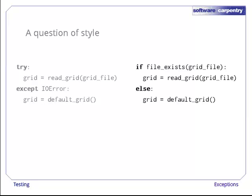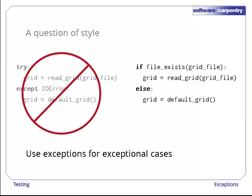Other programmers would explicitly test for the grid file and use if and else for control flow. It's mostly a matter of taste, but we prefer the code on the right. As a rule, exceptions should only be used to handle exceptional cases. If the program knows how to fall back to a default grid, that's not an unexpected event. Using if and else instead of try and except sends different signals to anyone reading our code, even if they do the same thing.